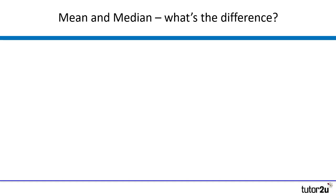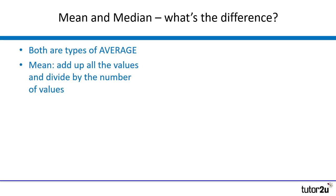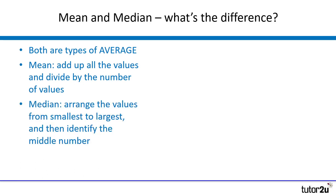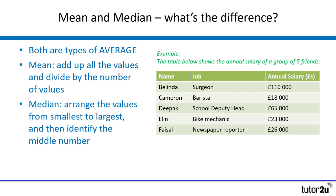Let's start by looking at the difference between the mean and the median. They are both a type of average, but as an economist we need to use them in different situations, and we're going to explore that over the next couple of minutes. To find a mean, we just add up all of the values and then divide by the number of values. For a median, we arrange the values from smallest to largest and then identify the value right in the middle.